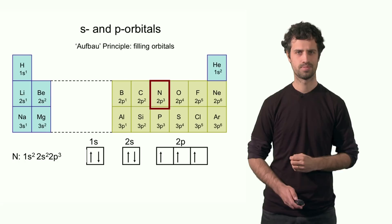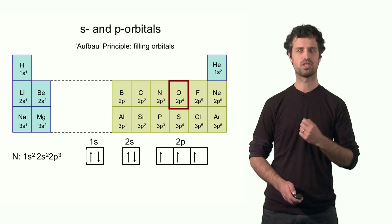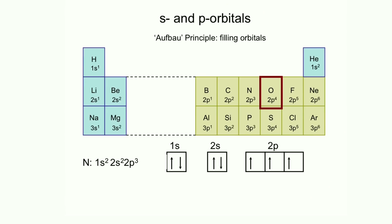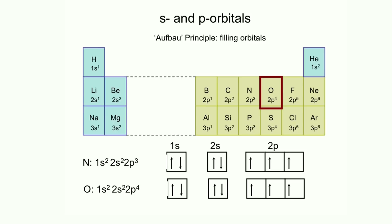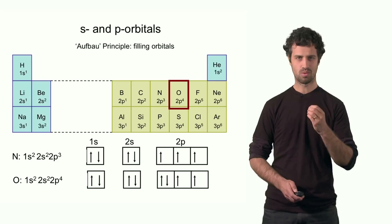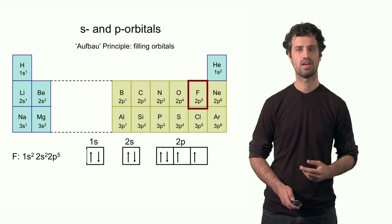Oxygen is next. Its extra electron must now pair up with one of the unpaired spins in the 2p subshell. The electron configuration of oxygen is 1s² 2s² 2p⁴. Fluorine has yet one extra electron, which is also forced to pair up with one of the unpaired electrons. The electron configuration of fluorine is 1s² 2s² 2p⁵.